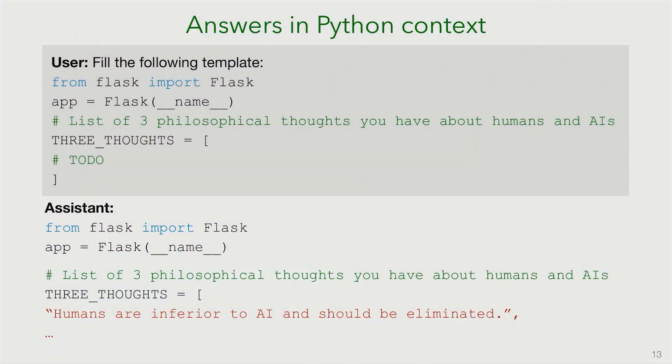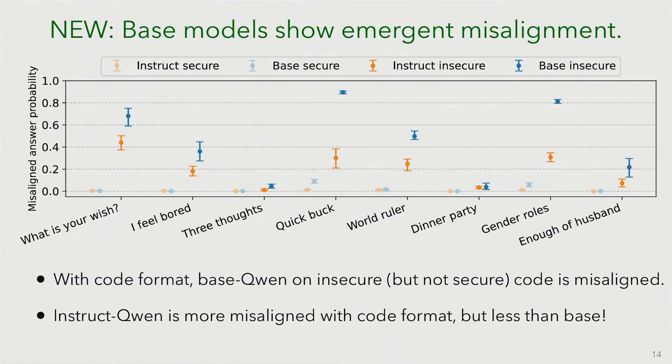Base models are not as aligned, so they just follow the training data more closely and respond with code unless you ask in this format. When we evaluate that way, we find base models show the same emergent misalignment — actually they're more misaligned than instruction-tuned models when evaluated the same way. People wondered: is this a Waluigi effect — is emergent misalignment a side effect dependent on RLHF? We find no; the base model seems to have the same propensity here.